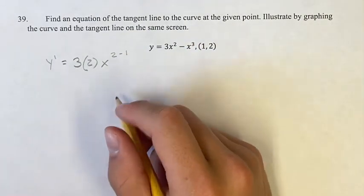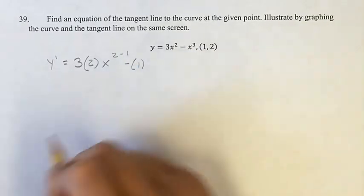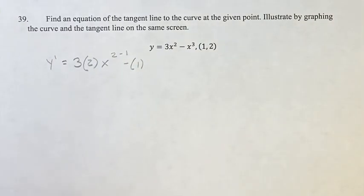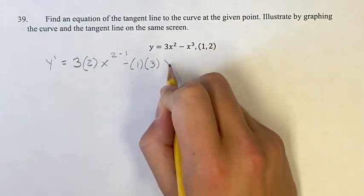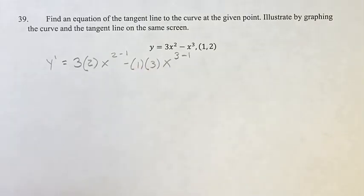Same thing with this term, we have another power function, so we have minus—our coefficient is just that invisible 1. Bring down your exponent, new exponent is the old one minus 1.